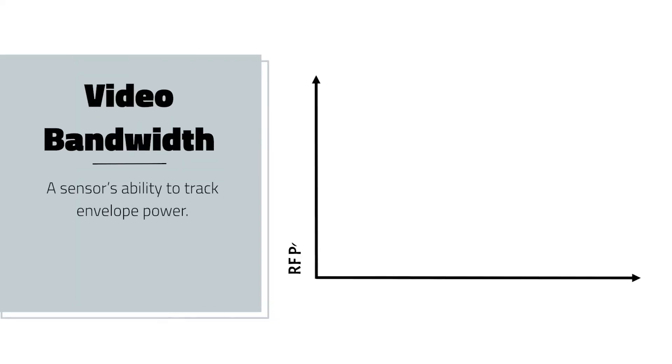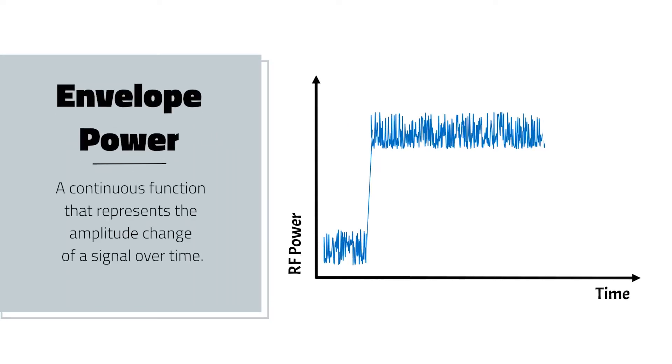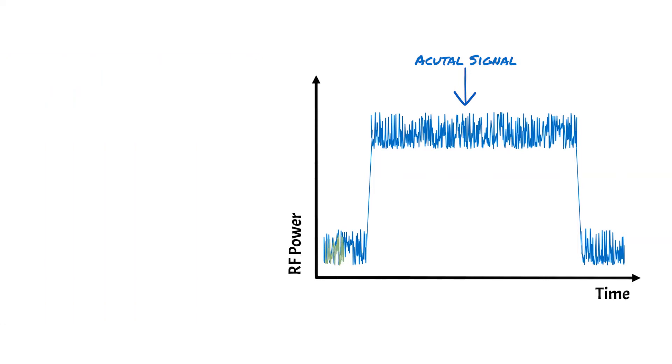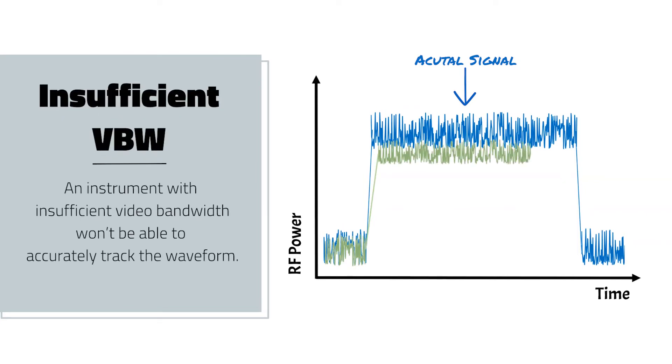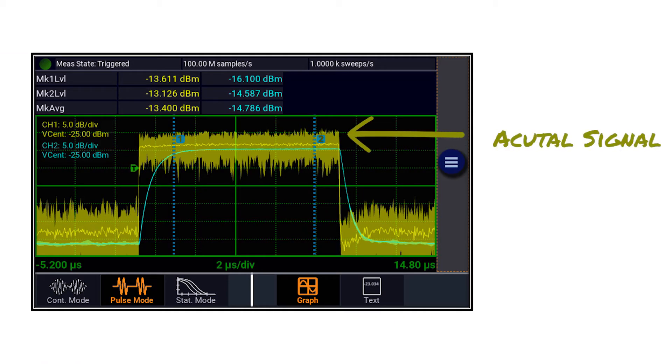Video bandwidth defines whether a sensor can capture a signal's envelope power. Envelope power is a continuous function that represents the amplitude's change of a signal over time, which occurs because of the pulsed nature of the signal, modulation, or distortion. An instrument with insufficient video bandwidth won't be able to keep up with the waveform, and will not only negatively affect envelope power readings, but related measurements as well, such as peak envelope power and average power.